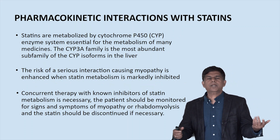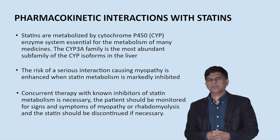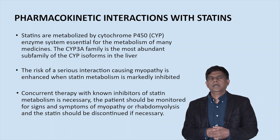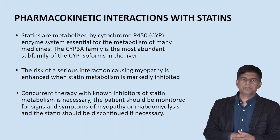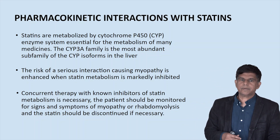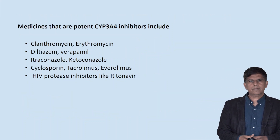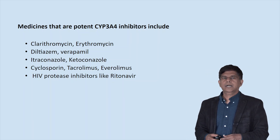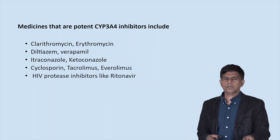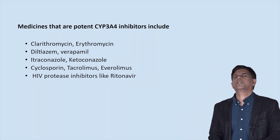When you talk about the pharmacokinetic interaction with statins, they are metabolized by cytochrome P450 — CYP enzymes. The CYP3A4 family is the most abundant subfamily of the cytochrome isoforms in the liver. The risk of serious interaction causing myopathy is enhanced when statin metabolism is markedly inhibited. CYP3A4 inhibitors include clarithromycin, erythromycin, diltiazem, verapamil, itraconazole, ketoconazole, cyclosporine, tacrolimus, everolimus, and HIV protease inhibitors like ritonavir.